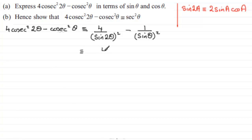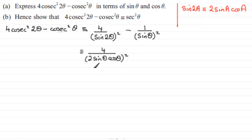We can think of this now as being the same as 4 all over 2sinθcosθ, all squared, and then we've got minus 1 over sinθ, all squared.